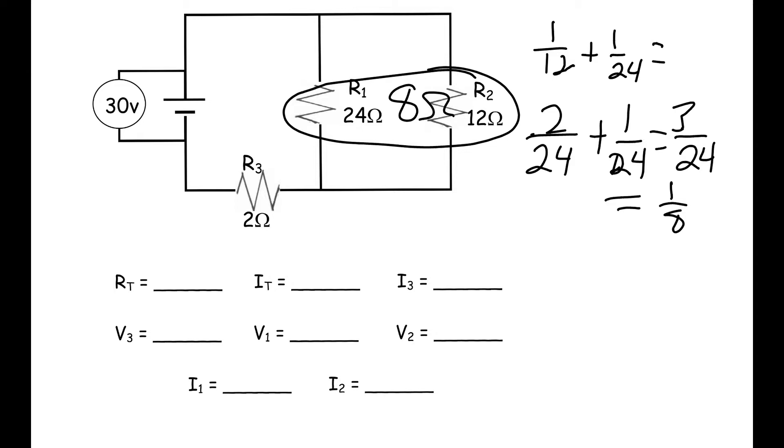Then we're going to add 8 ohms to our 2-ohm resistor. So we do 8 plus 2, and that's going to give us 10 ohms.